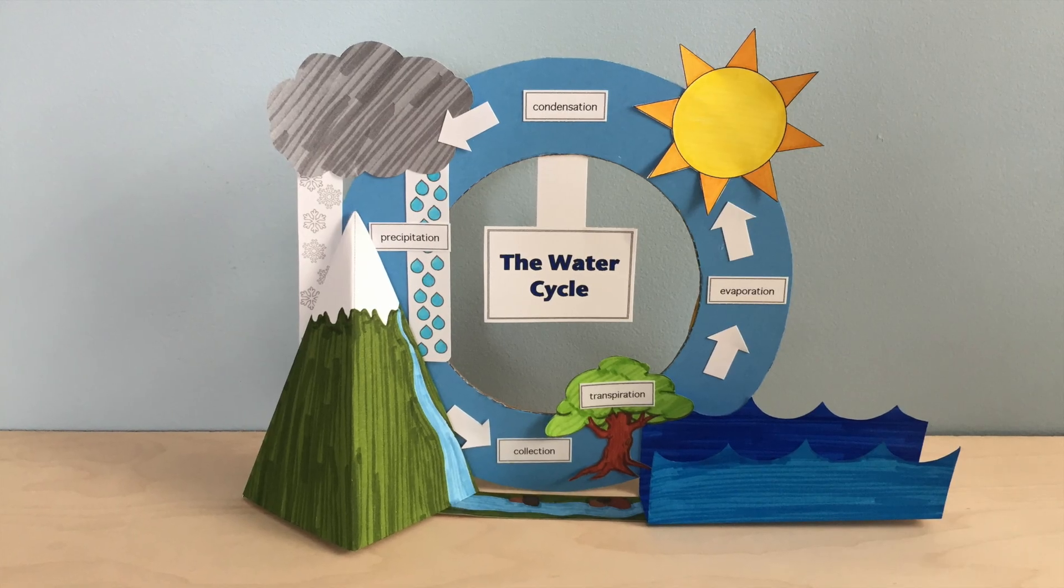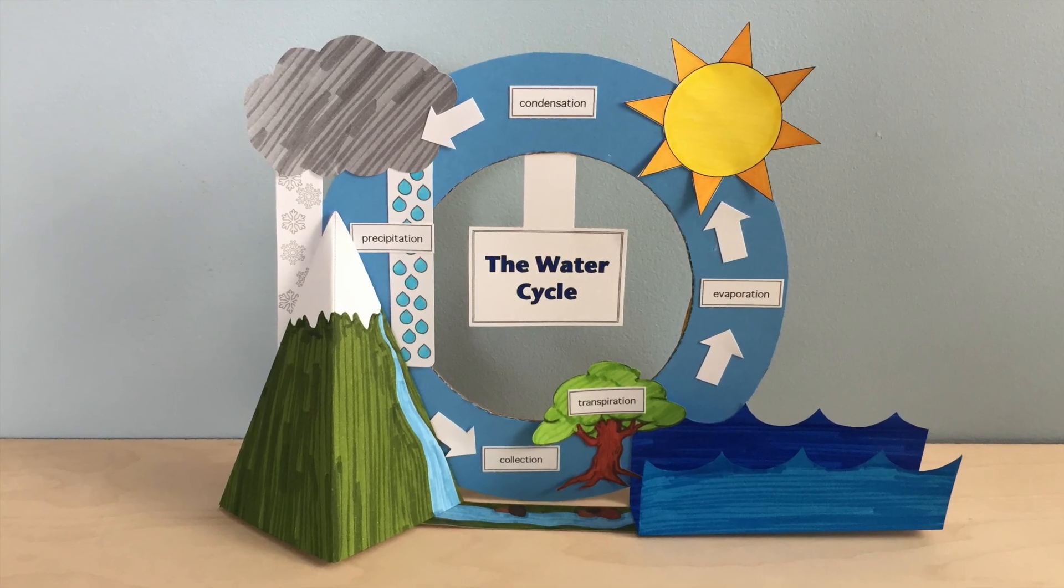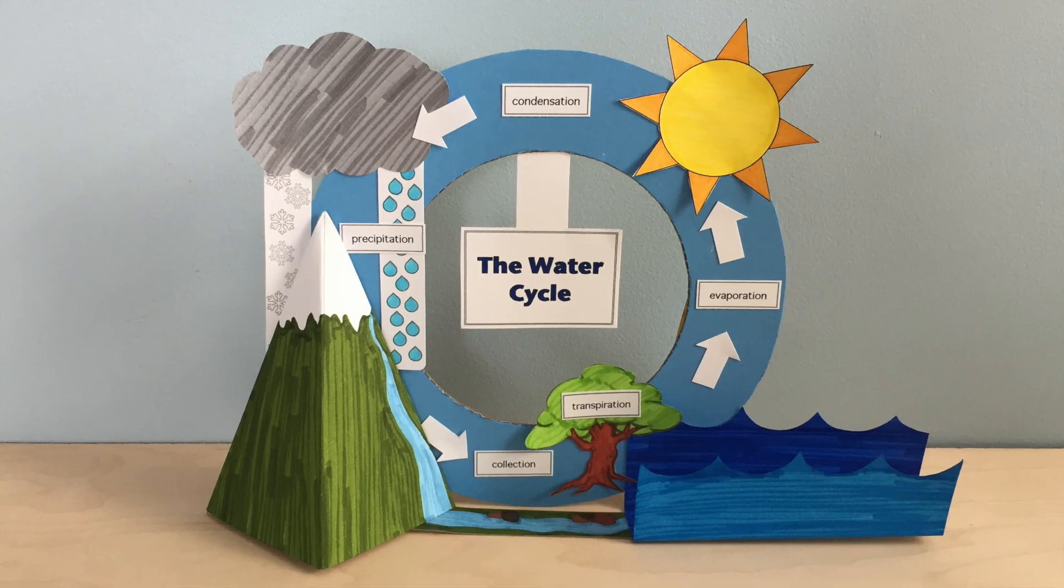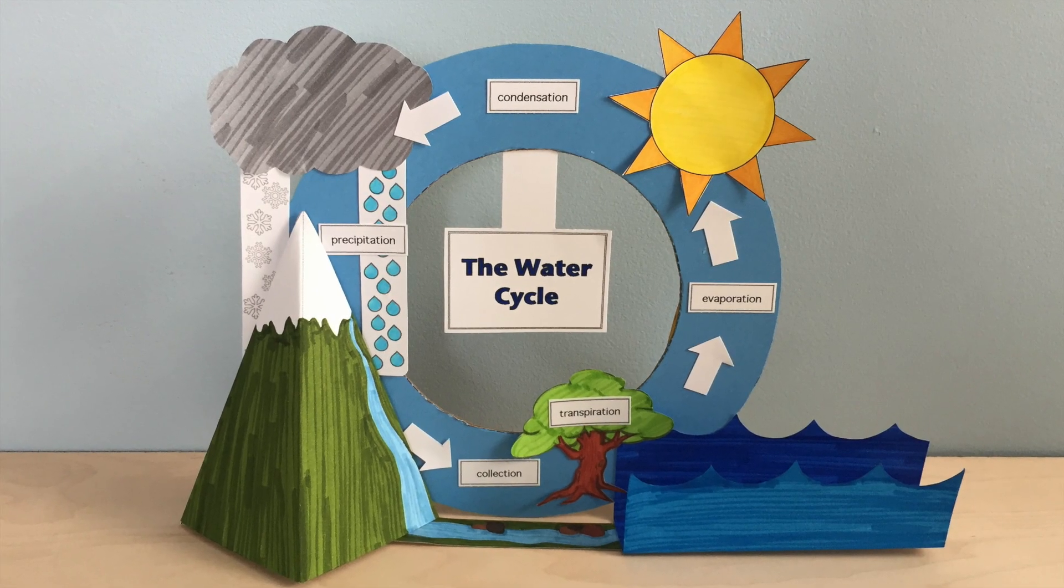Hi, I'm Laura. Today I'm going to show you how to make this water cycle diagram. It helps you understand how water goes from one place to the next on Earth. You can make it with or without the tree depending on what you've been learning.